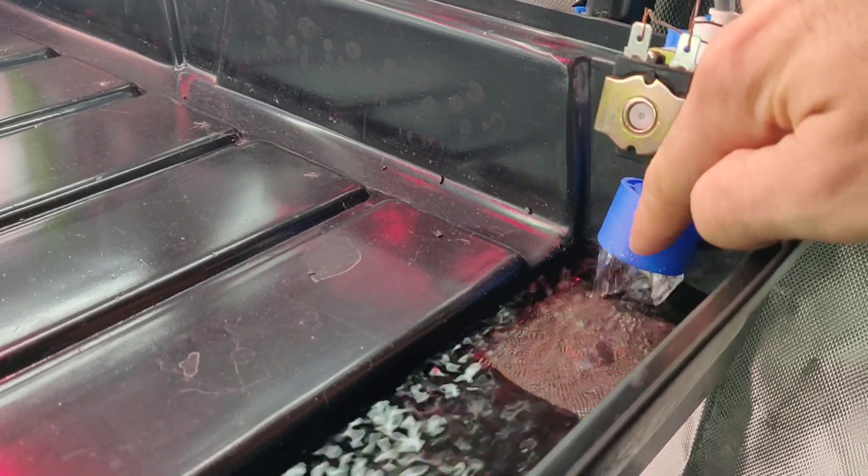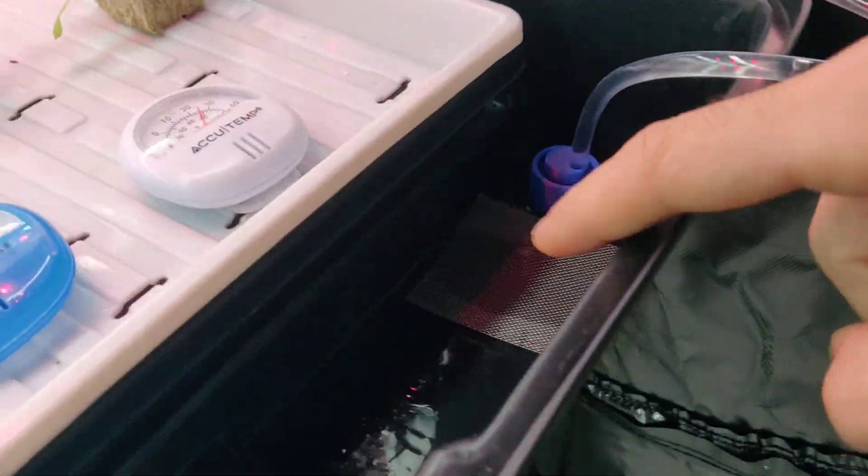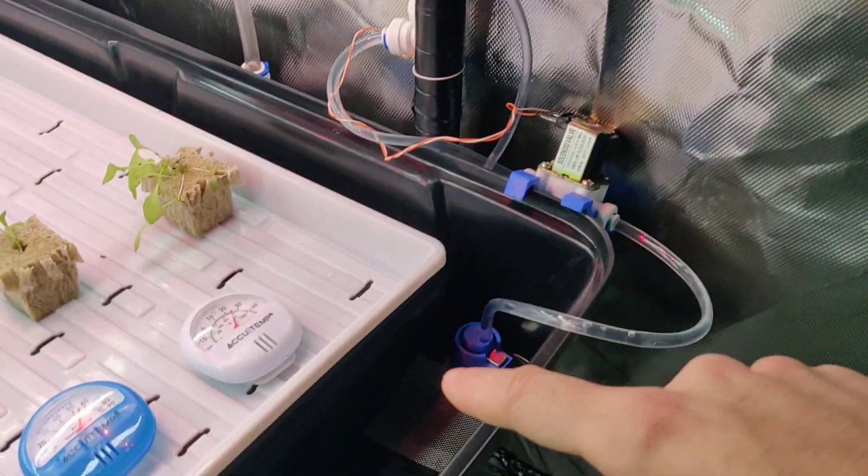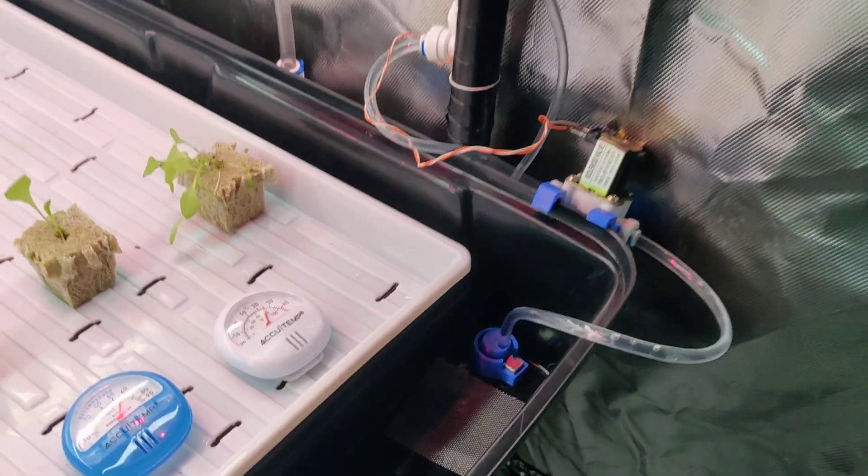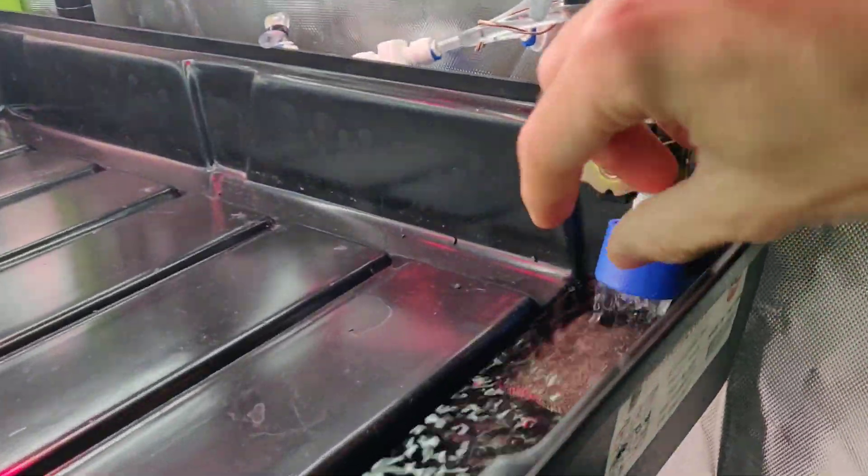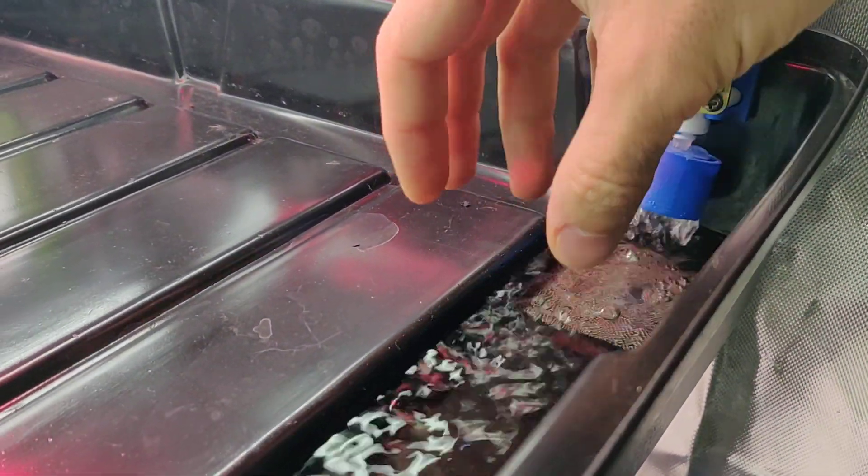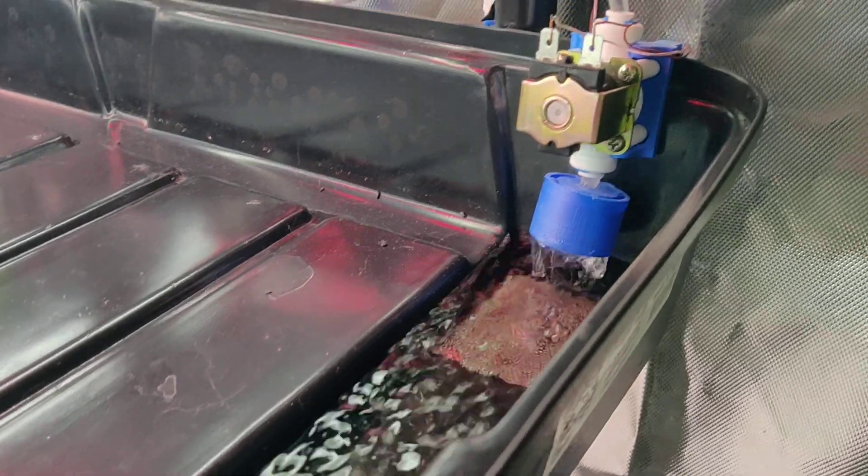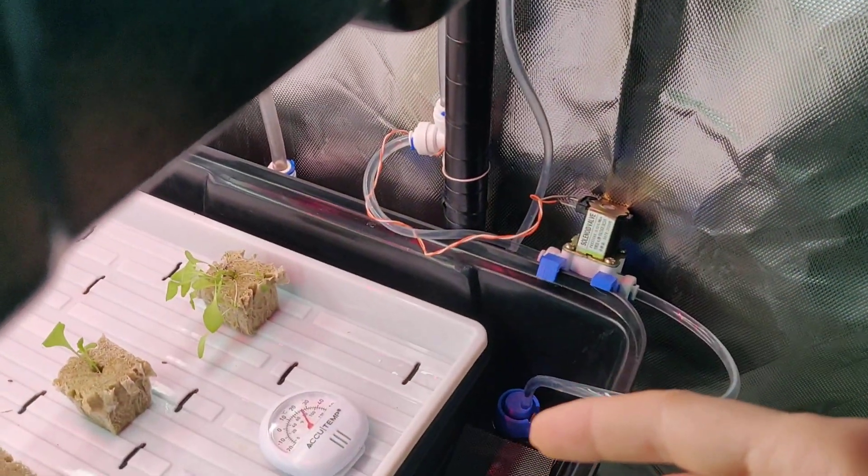And you might be wondering, what is this blue thing? And why is this one different than this? Well, this is basically a diffuser so that the water doesn't just spray out. It gently drops in the tray. And this is the latest version. Under here, that's the old version.